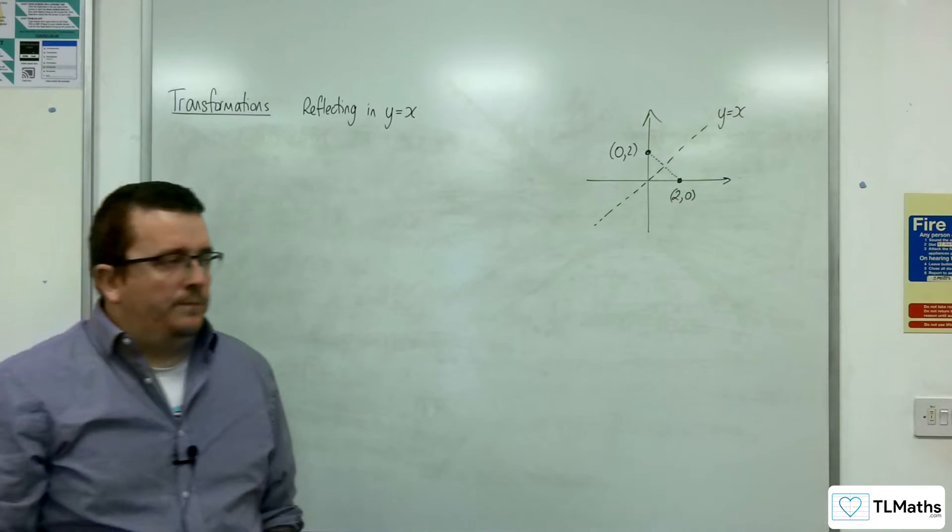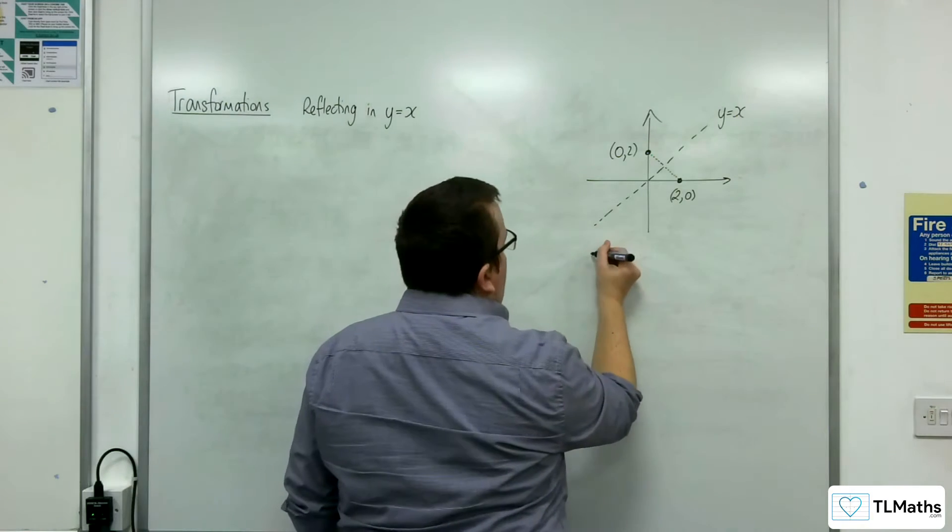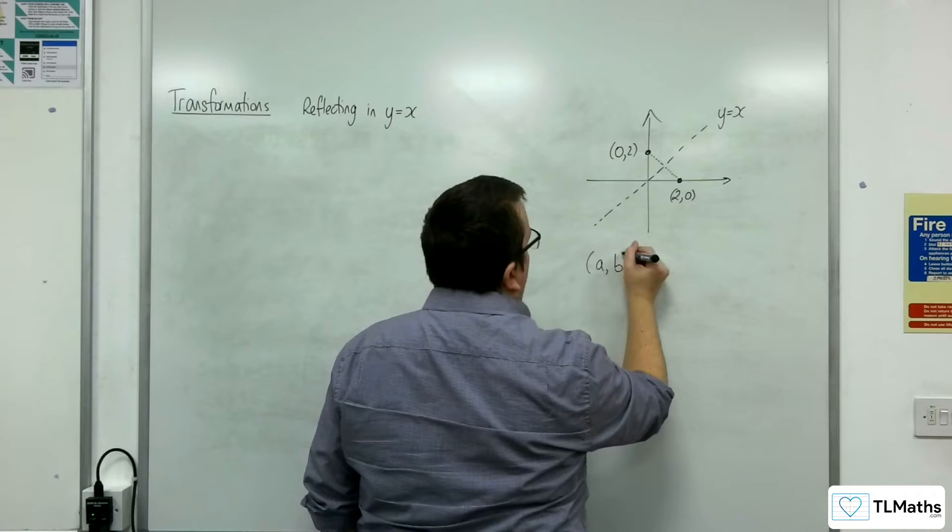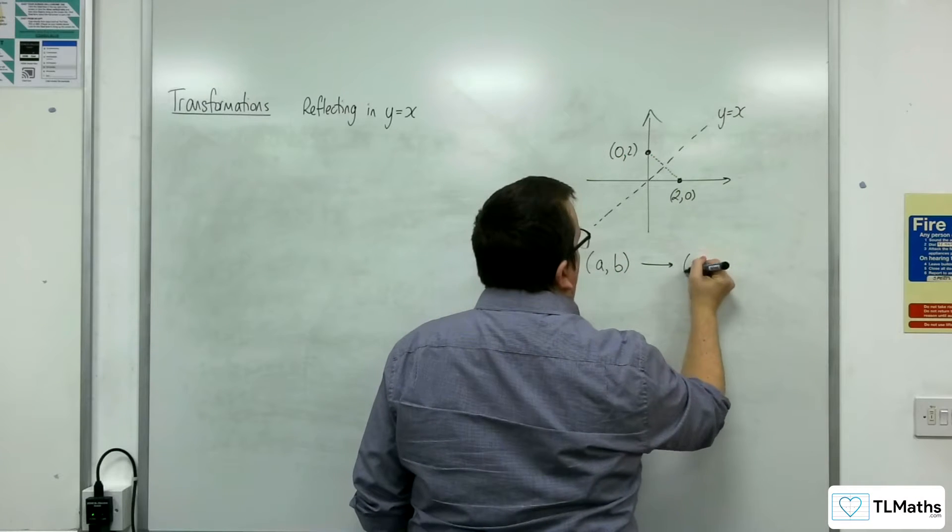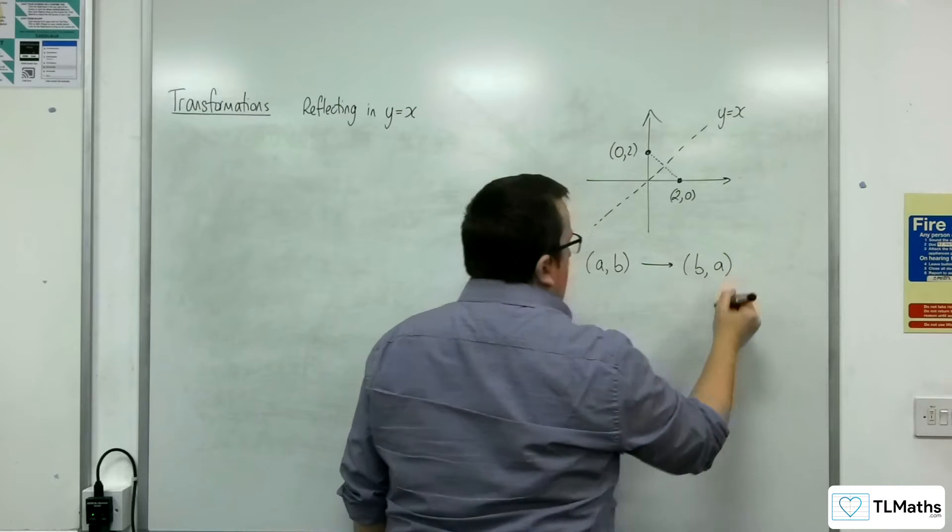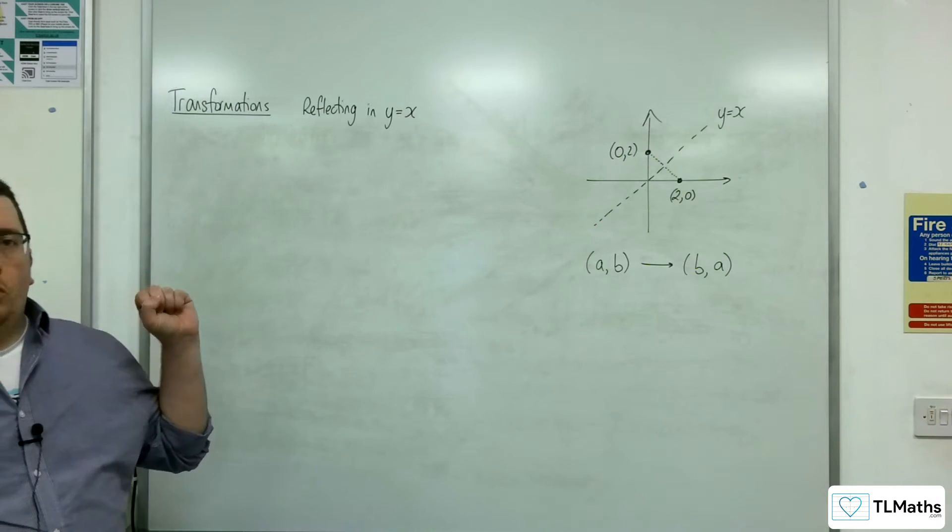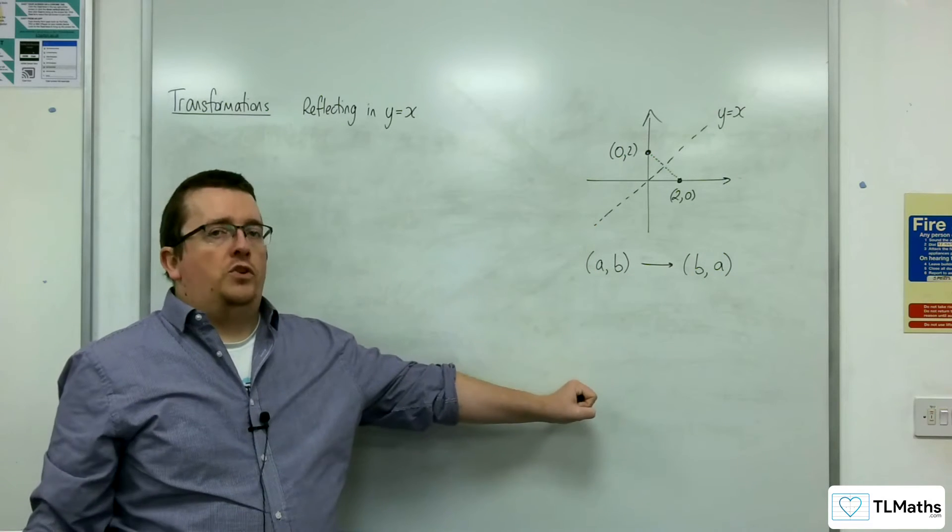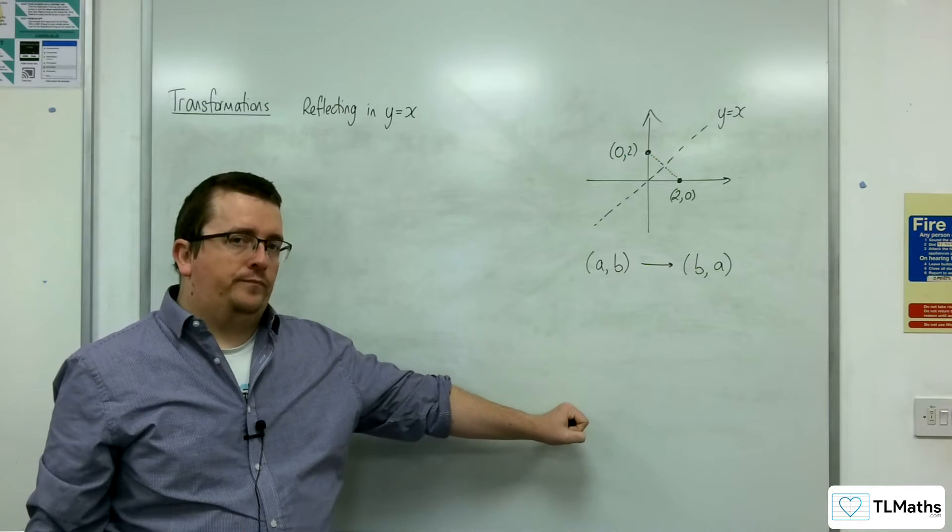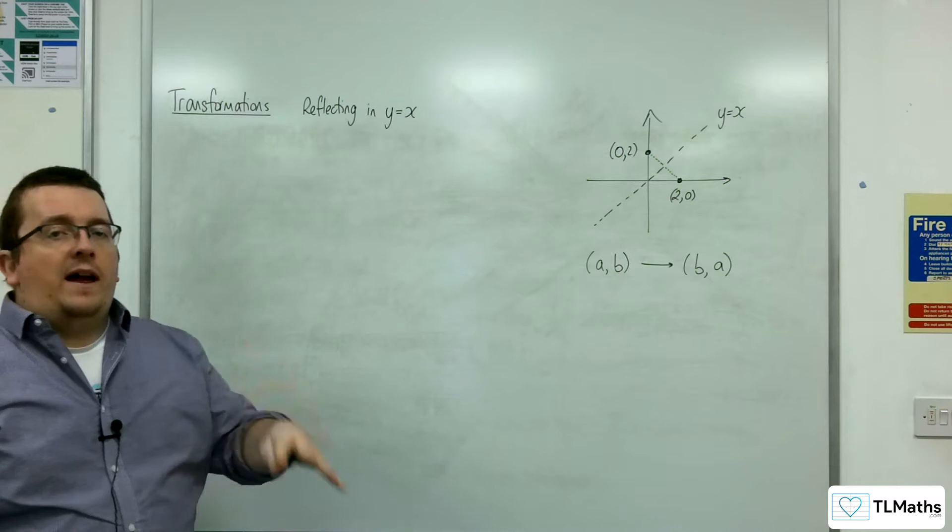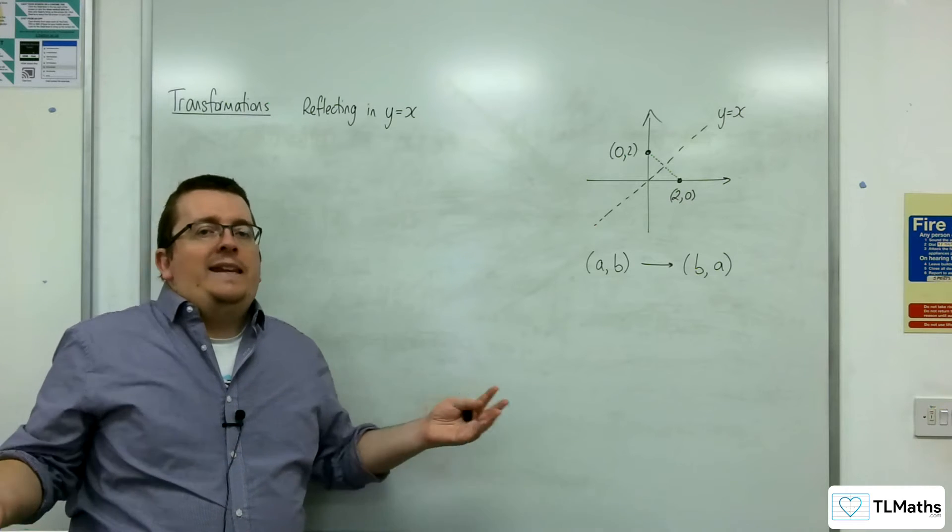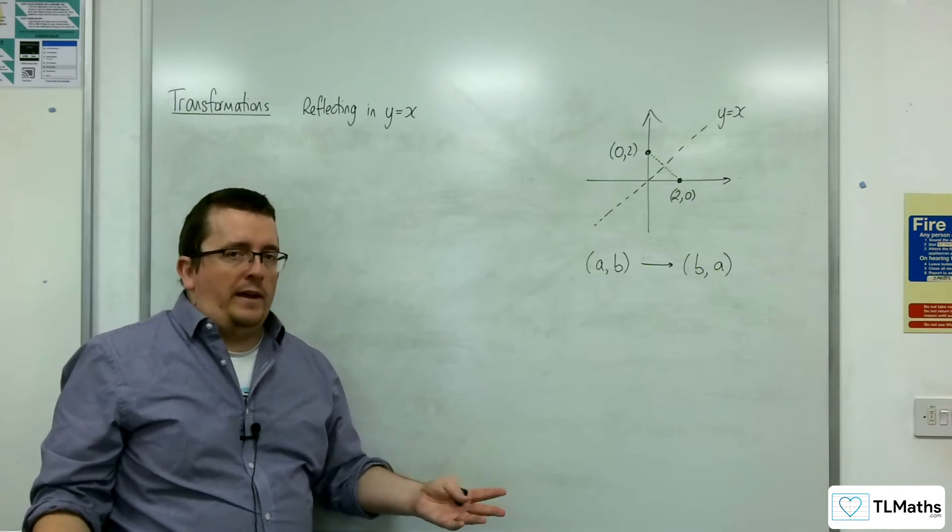So the consequence is that if you reflect any coordinate in the line y equals x, it will become (b, a). The x coordinate and the y coordinate swap position. x's get replaced with y's, y's get replaced with x's. That is how you reflect any curve in the line y equals x.